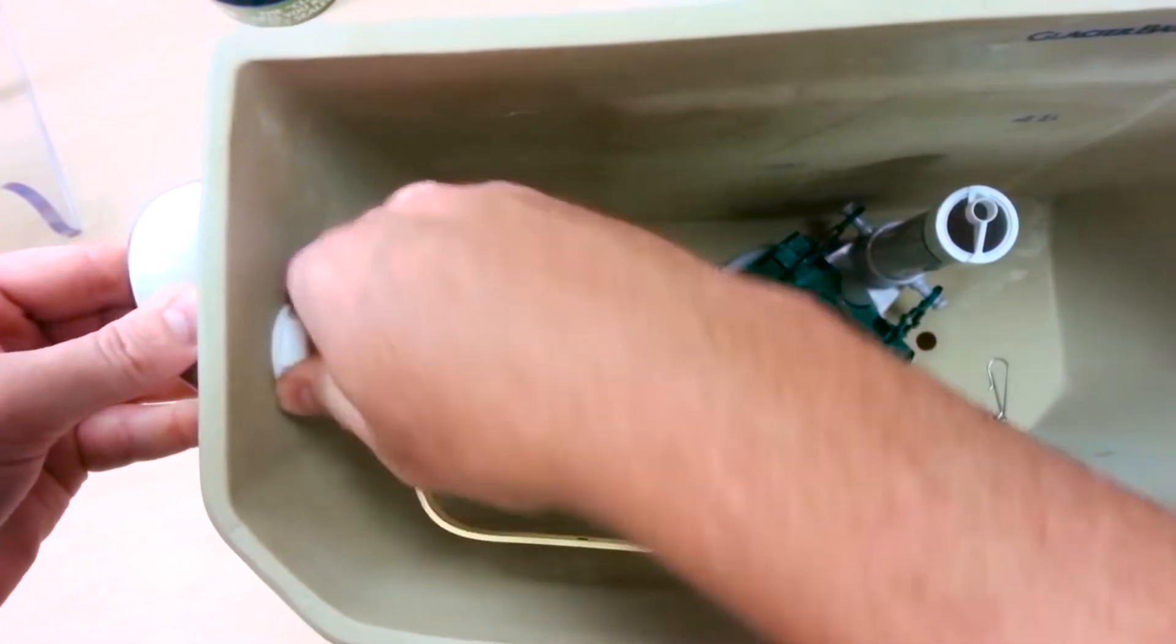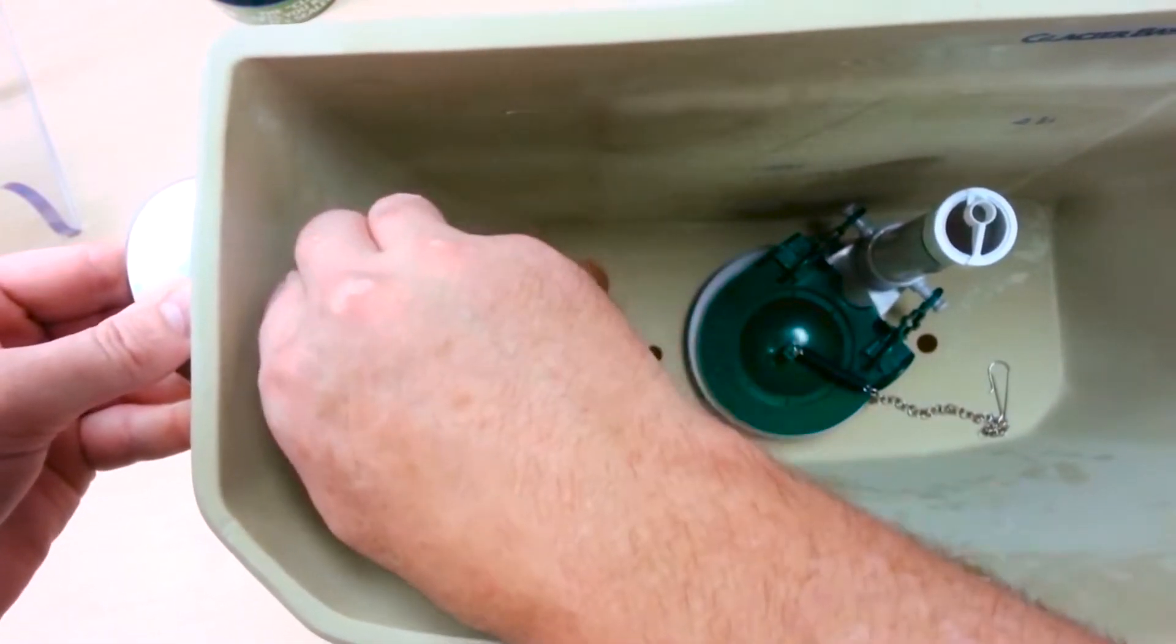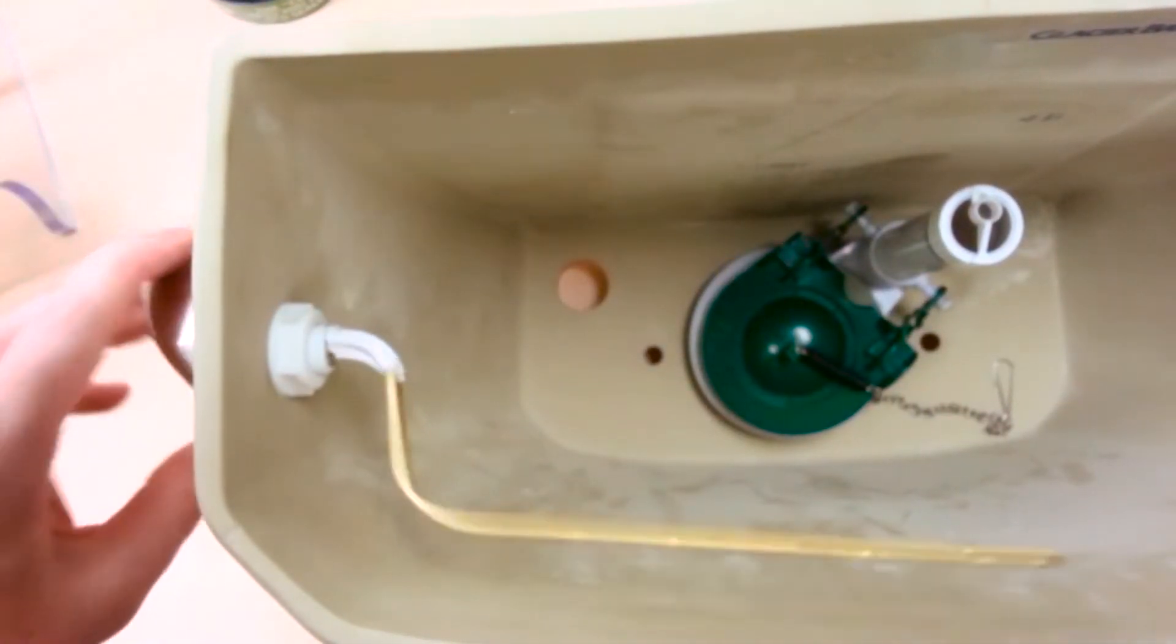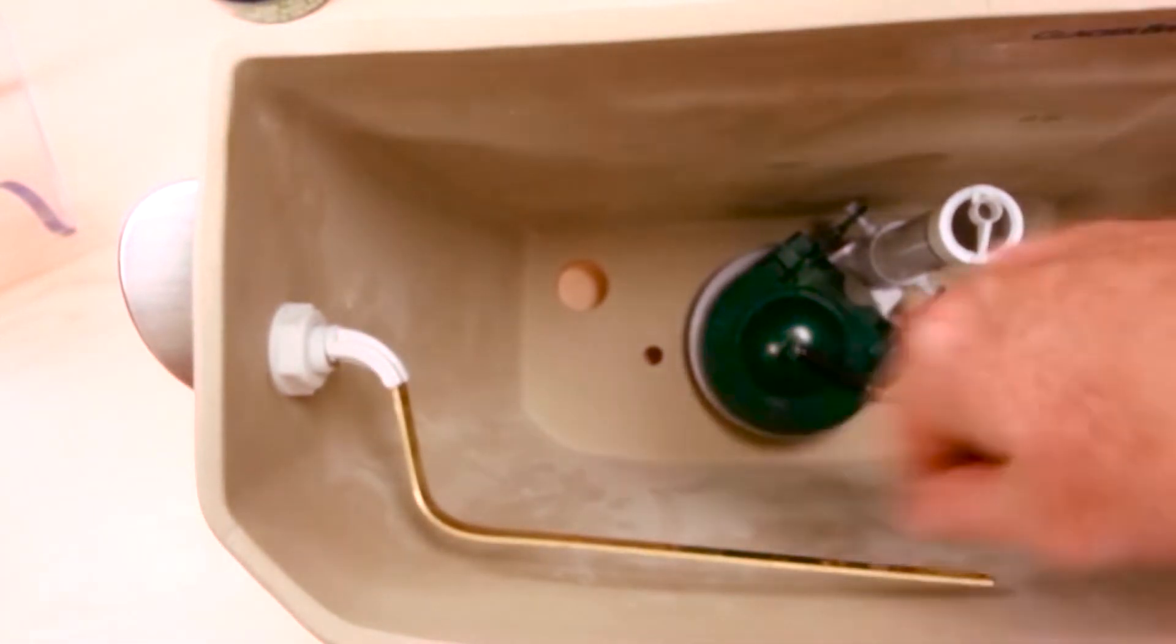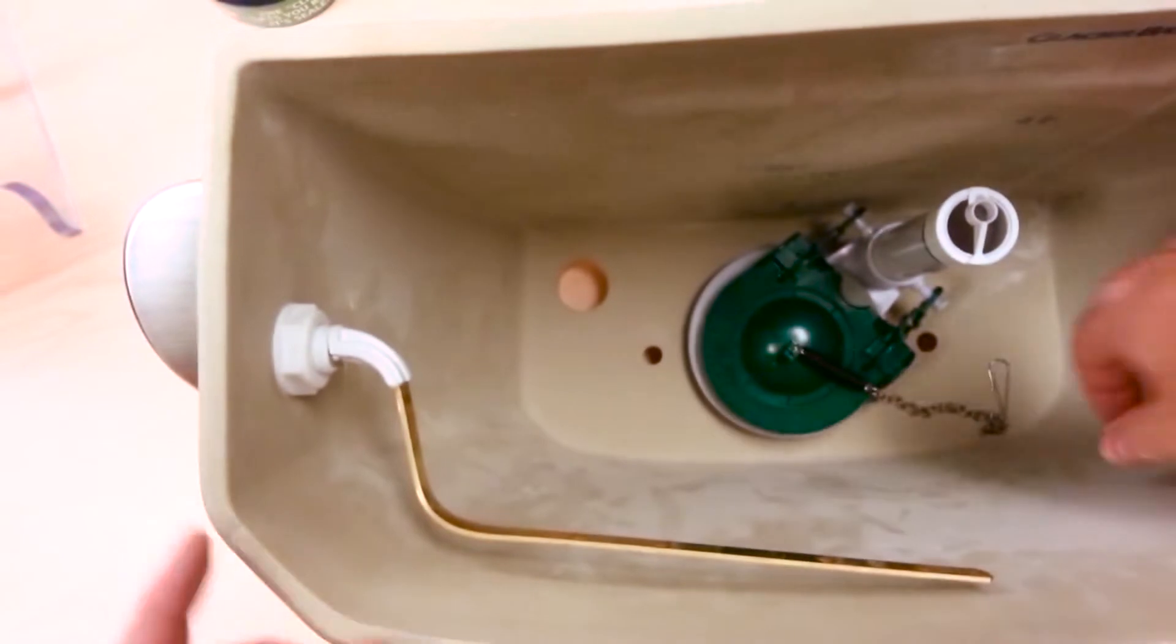Now if you need to snug it up a little bit with a wrench that's fine, just be careful not to over-tighten it and crack the tank. Go ahead and test your lever to see that it's not rubbing up against the wall here. You do want to make it as parallel to the wall as possible so you create the most lift.